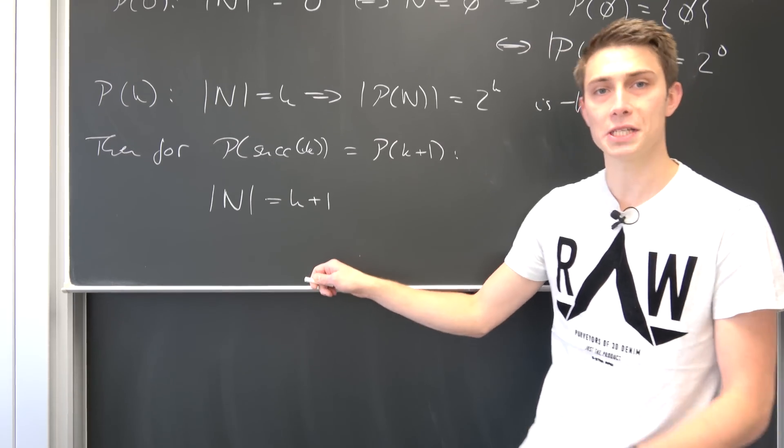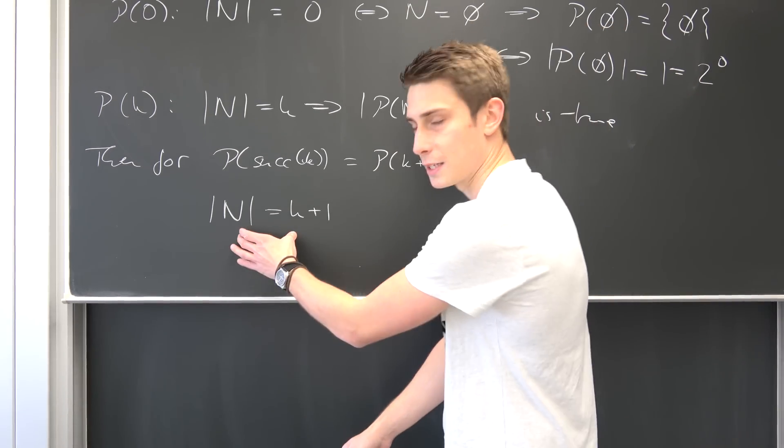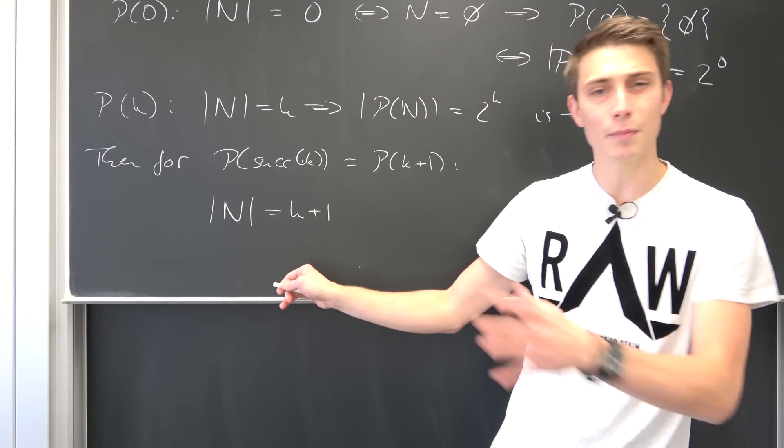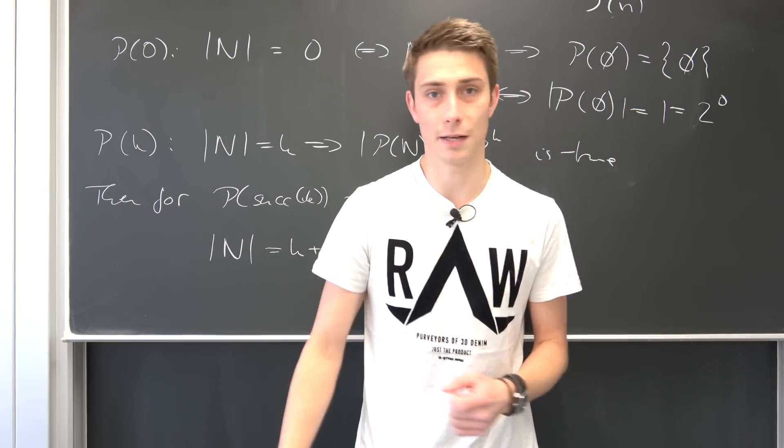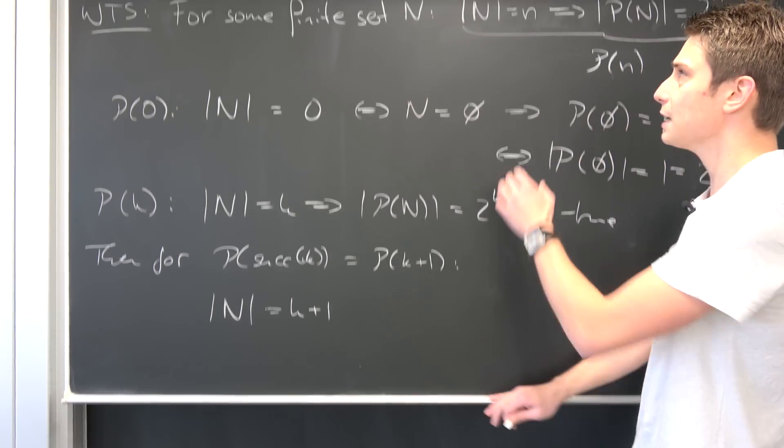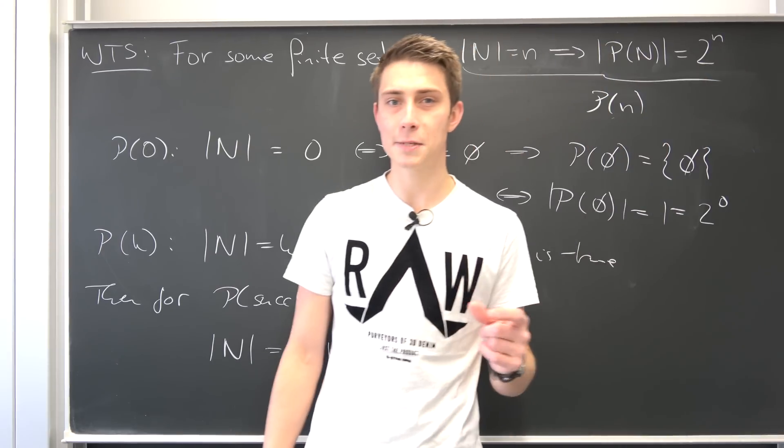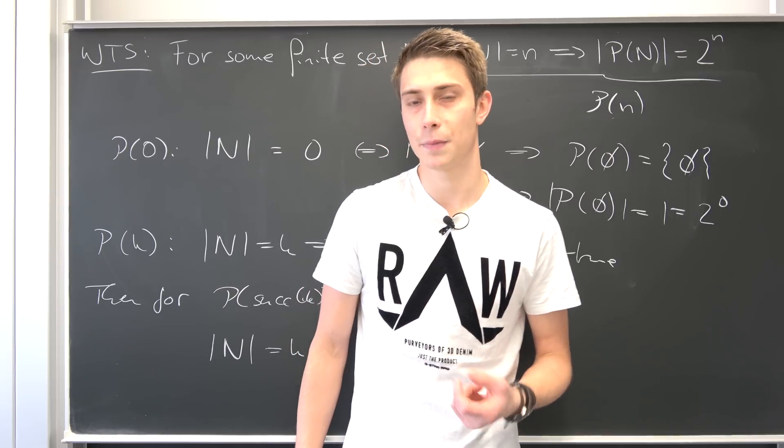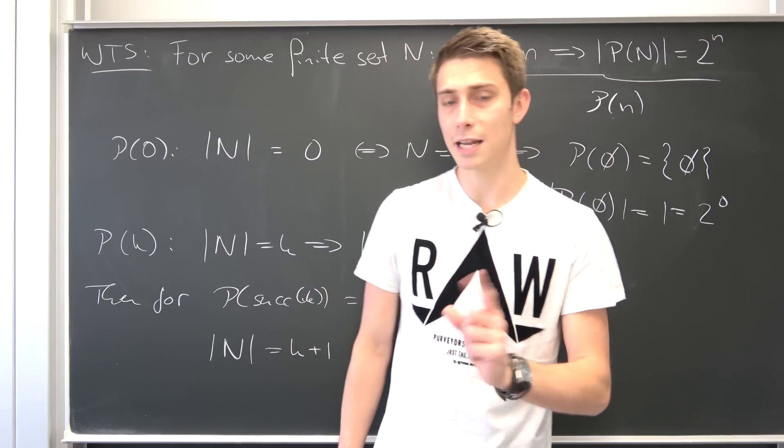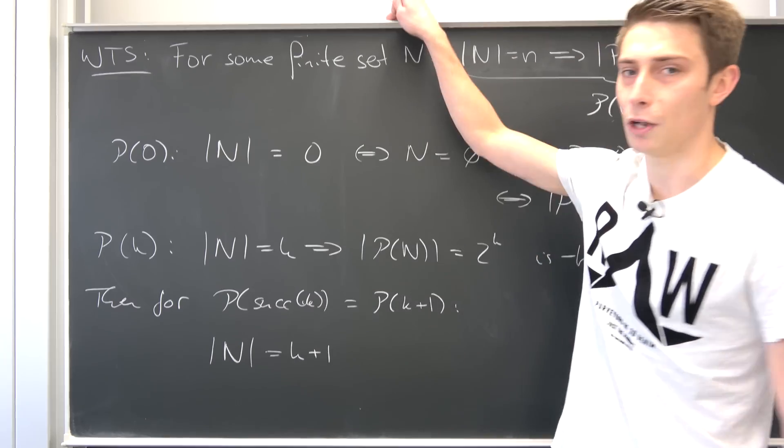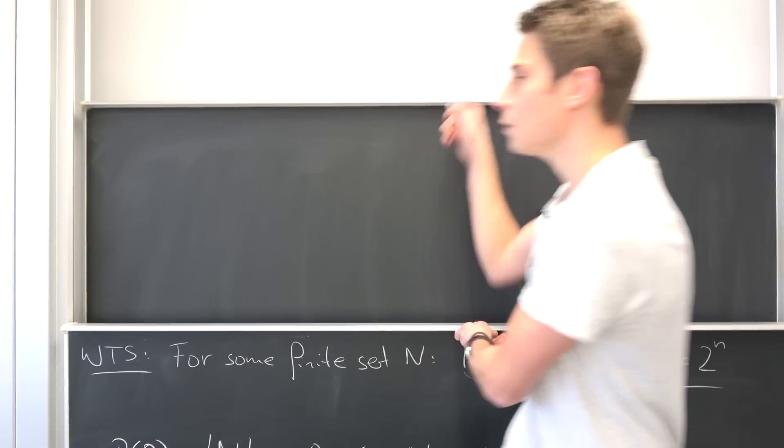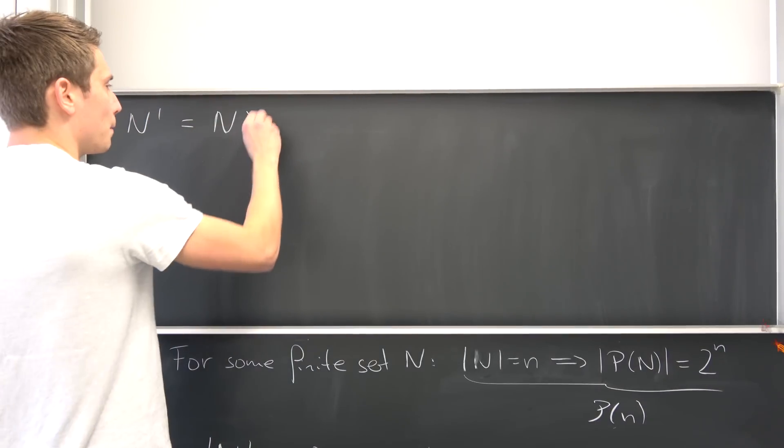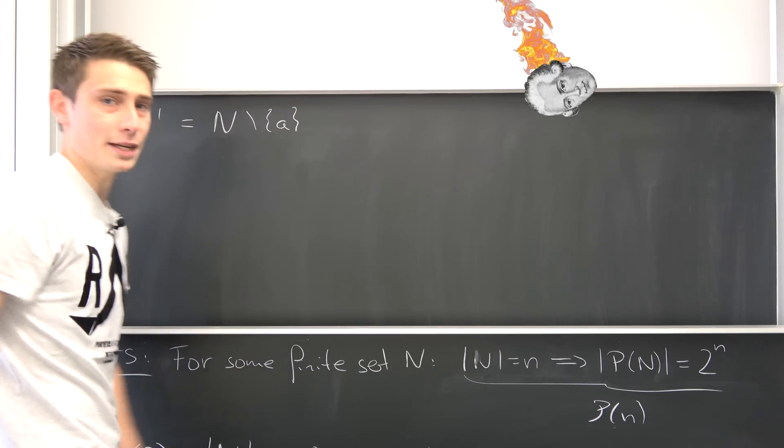But how could we continue? Well for this, I would like to take a look at this problem right here, but a little bit different. So why not take a look at some random arbitrary element A, for example, out of this N right here. So if we form subsets of N, then those subsets can have either A in them or they can't have A in them. What do those subsets that do not have A in them look like? Well, we can formulate this differently. Why not take a look at another set N prime, which is nothing but the set N but without our element A right here.